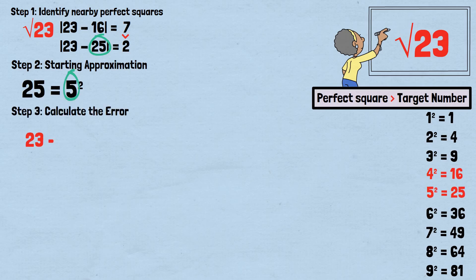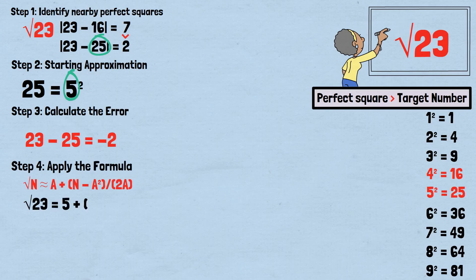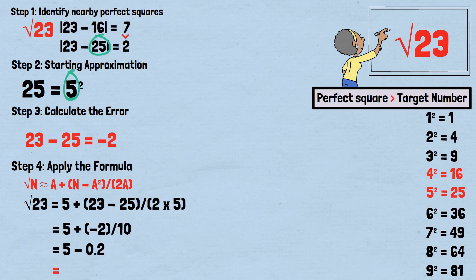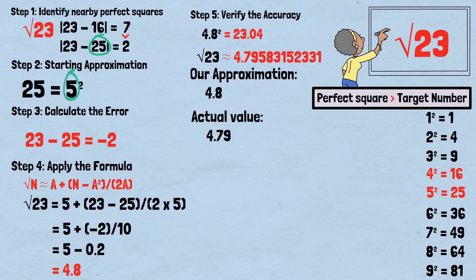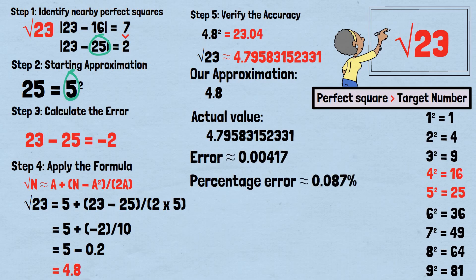Step 2: starting approximation — since 25=5², our starting approximation is 5. Step 3: error — 23 minus 25 equals negative 2. Step 4: apply the formula — √23 ≈ 5 + (−2)/10 = 4.8. Step 5: verify — 4.8²=23.04. Actual value is approximately 4.79583152331. Error approximately 0.00417; percentage error approximately 0.087%. The method works perfectly even with negative adjustments.